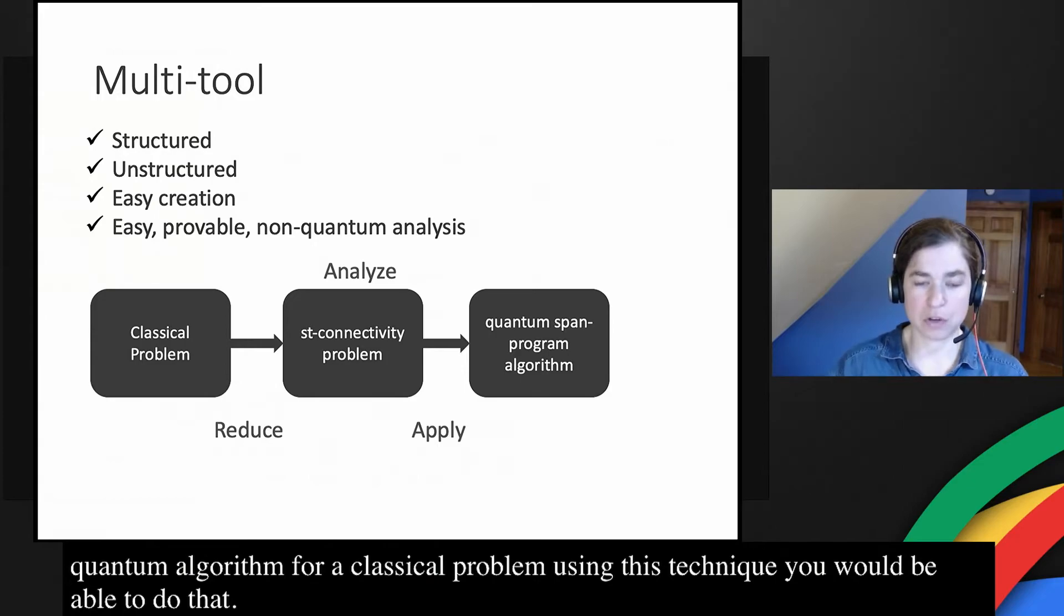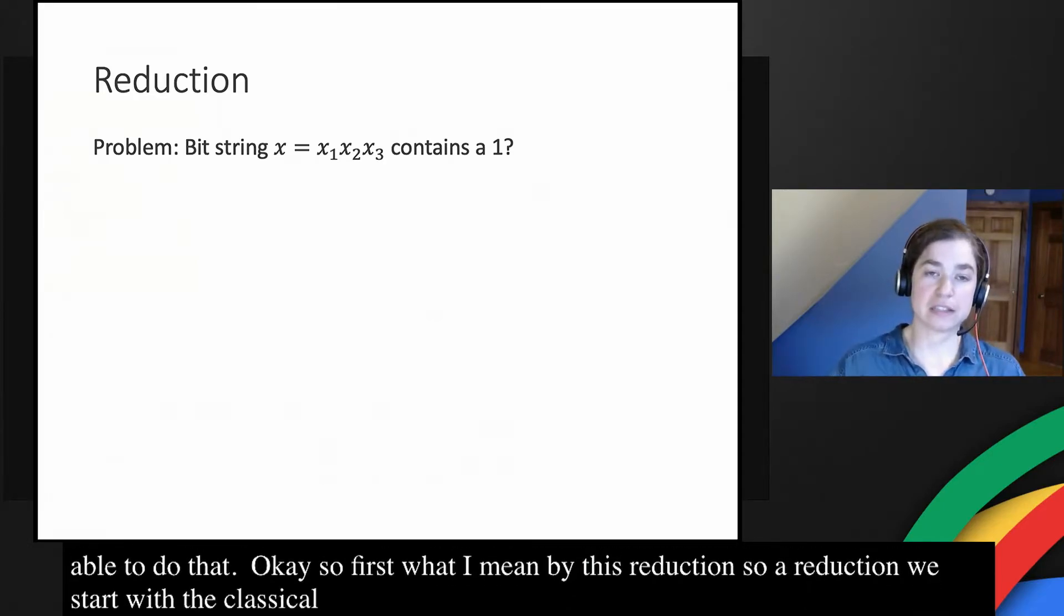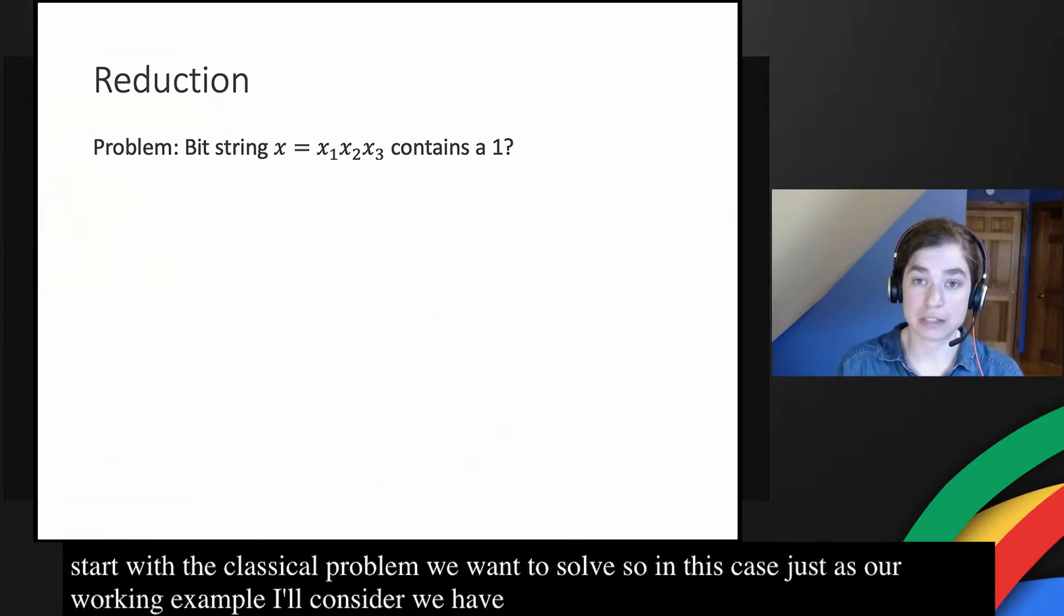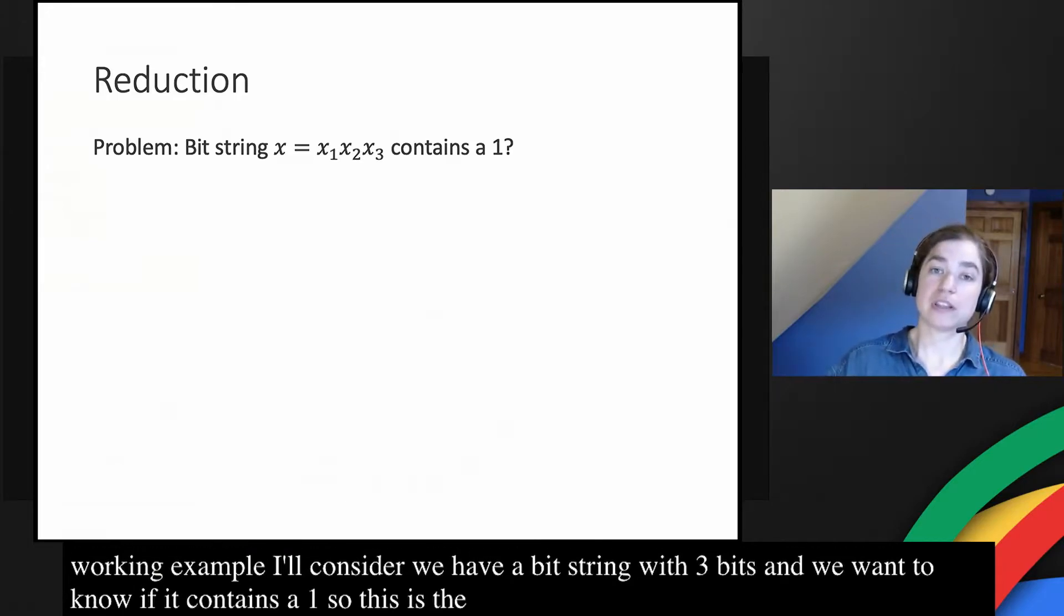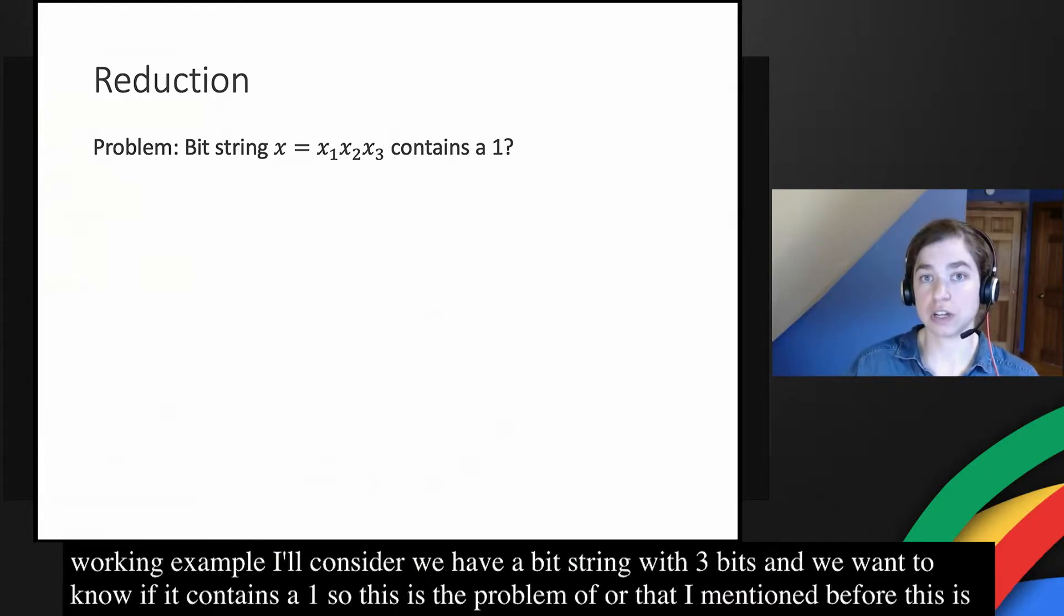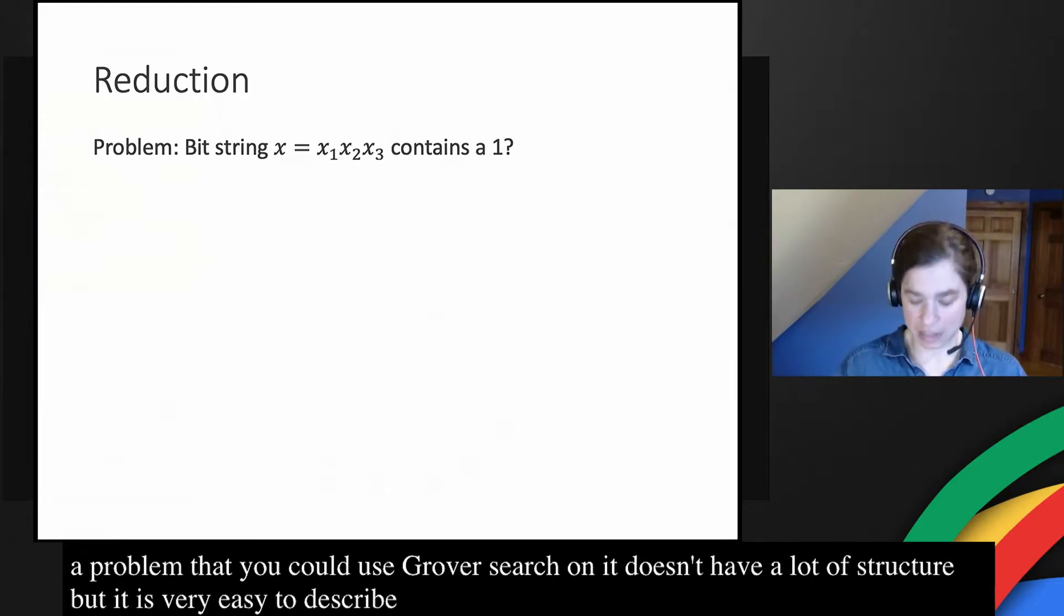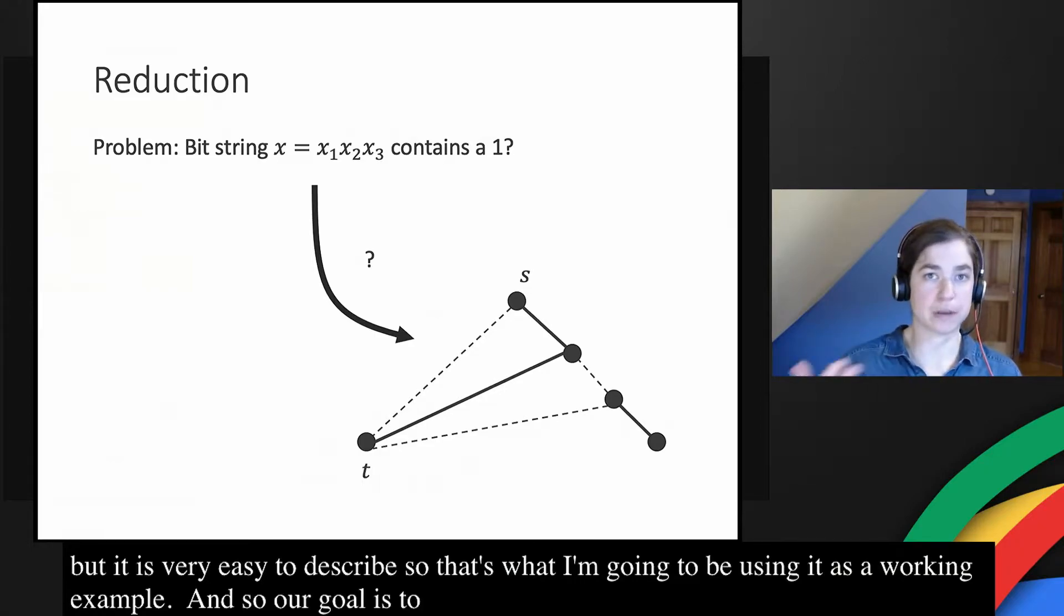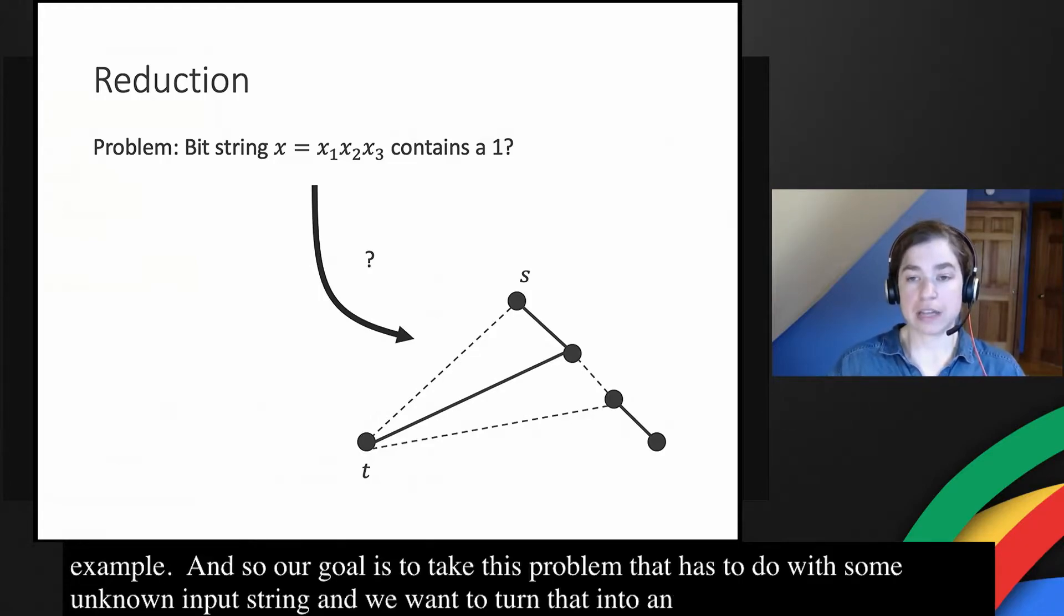So first, what do I mean by this reduction? A reduction to ST connectivity. We start with the classical problem that we want to solve. In this case, just as our working example, I'll consider that we have a bit string with three bits and we just want to know if it contains a one. So this is the problem of OR. This is a problem that you could use Grover's search on. It doesn't have a lot of structure, but it is very easy to describe. Our goal here is to take this problem that just has to do with some unknown input string, and we want to turn that into an ST connectivity problem.